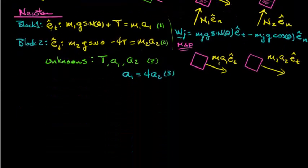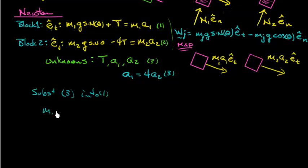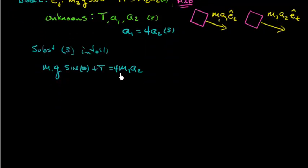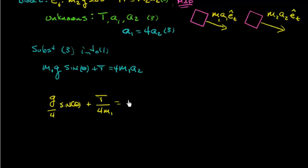Let's do a substitution — we're going to substitute equation 3 into equation 1. We get m1·g·sinθ plus tension equals m1 times a1. Since a1 is 4a2, we put 4a2 in there. Then we divide everything by 4m1 to isolate a2, giving us g/4 · sinθ + T/(4m1) = a2.